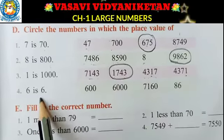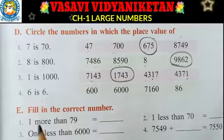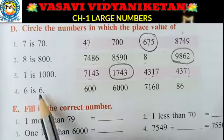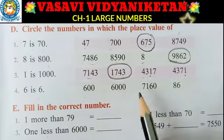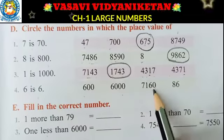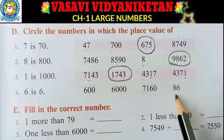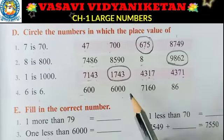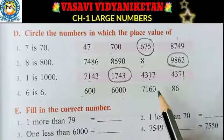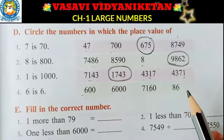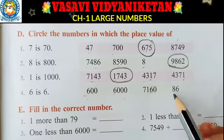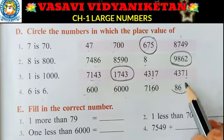Next, 6 is 6 Nana — so 6 is in the 1's place. The numbers are 600, 6,000, 7,160, and 86. Here 6 is in the 100's place, here 1,000's place, here 10's place, and here 1's place. So which one is correct? 86 is the answer.